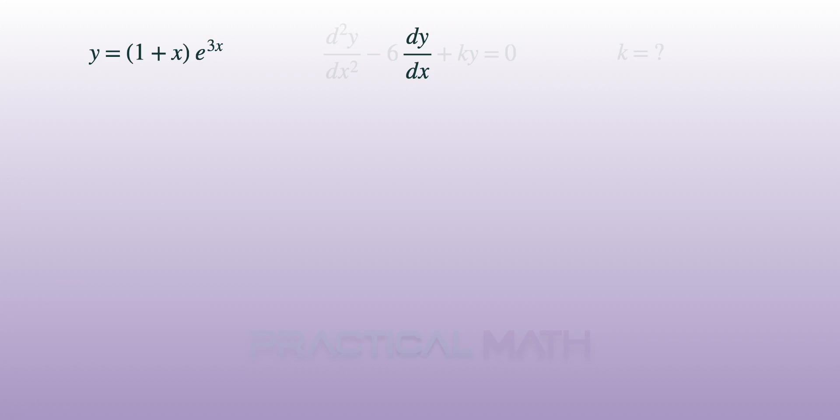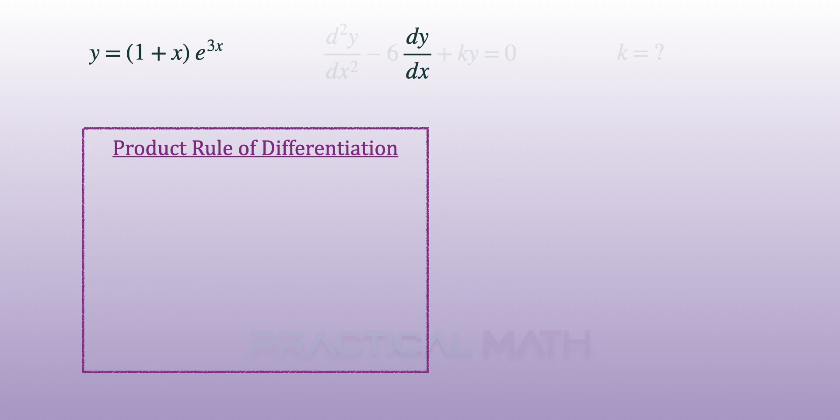Let's begin by finding the first derivative of y. To differentiate a product of terms, we'll apply the product rule. Differentiating uv with respect to x will give a result of u multiplied by the differentiation of v plus v multiplied by the differentiation of u.